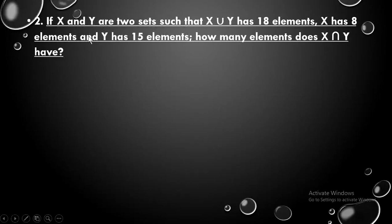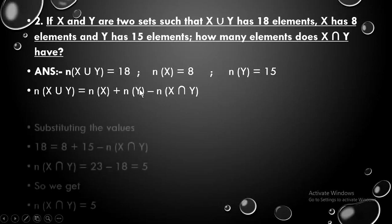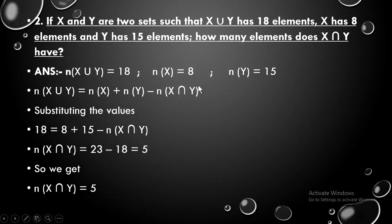The next question says: if X and Y are two sets such that X union Y has 18 elements, X has 8 elements, and Y has 15, then how many elements does X intersection Y have? Write the formula, substitute the values — 18 equals 8 plus 15 minus n(X∩Y) — and when you solve, you get the answer as 5.